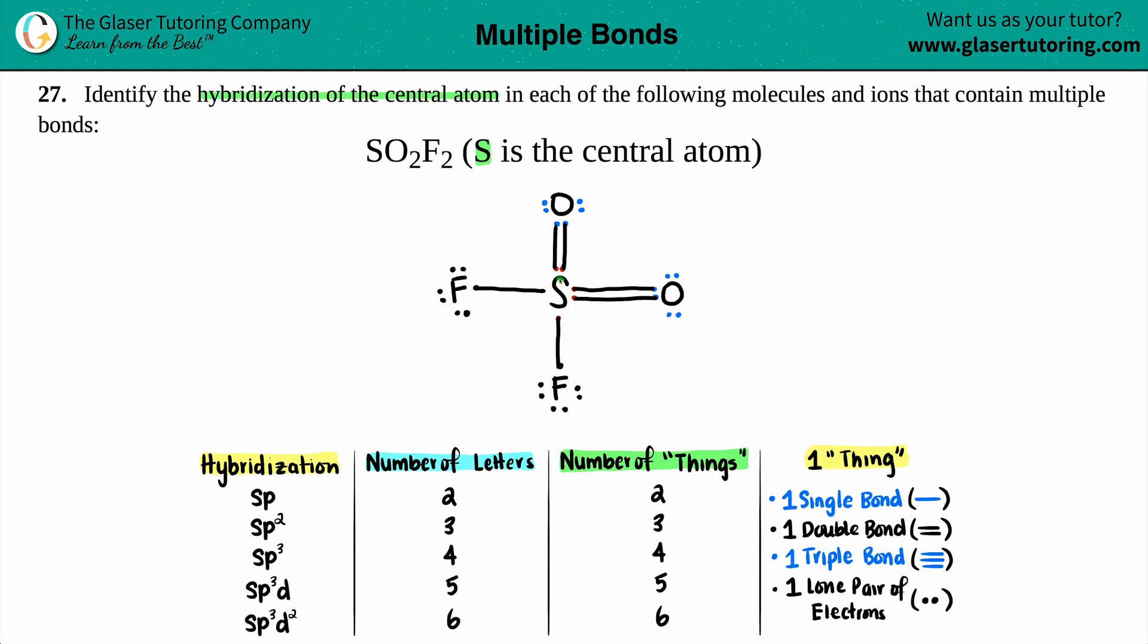So now let's see what's around the sulfur. Well, it's got a single bond. That's one thing. It's got another single bond. That's two things. Now here comes my double bonds. I grouped them together. So three things, four things, no lone pairs around the sulfur, right? I can't group any of these dots because they don't exist for the sulfur.